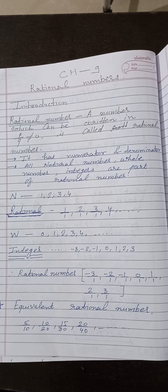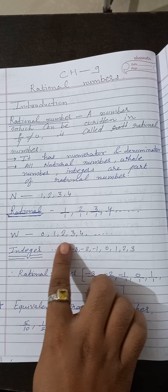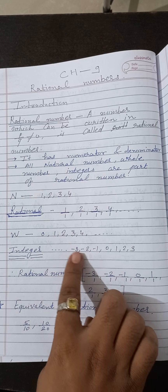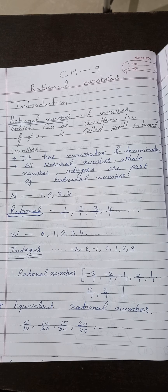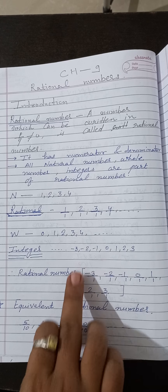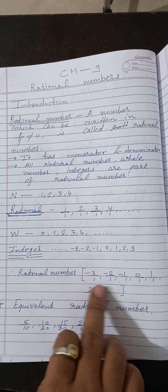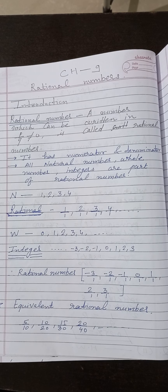Whole numbers 0, 1, 2, 3, 4 can also be written in p by q form, so we can say that whole numbers are rational numbers. Similarly, integers are also rational numbers. This is what a rational number is.